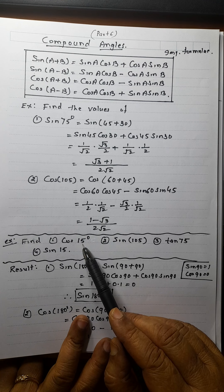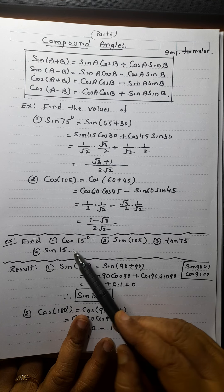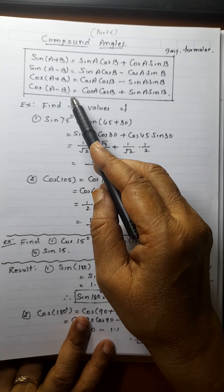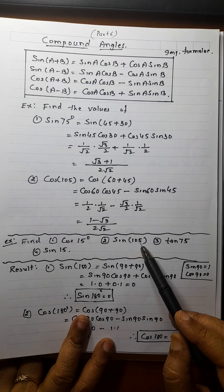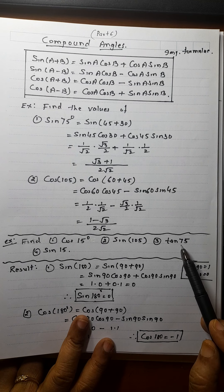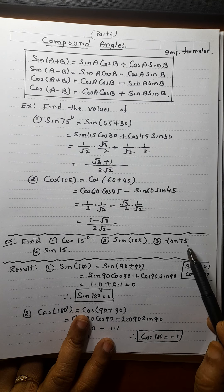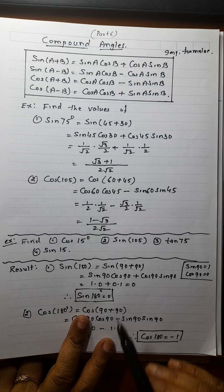Similarly, for 15° you can find it as 45 minus 30: cos of (45°−30°), using the formula. And 105° is 60+45, 75° is 45+30, and 15° is 45−30.